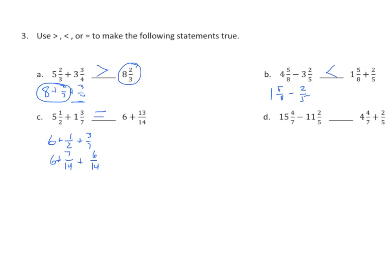For D, 15 minus 11 is 4, so I have 4 and 4 sevenths minus 2 fifths on the left. Using the same reasoning as B: my minuend equals my first addend, but on the left I'm subtracting 2 fifths and on the right I'm adding 2 fifths. Therefore, 15 and 4 sevenths minus 11 and 2 fifths is less than 4 and 4 sevenths plus 2 fifths.